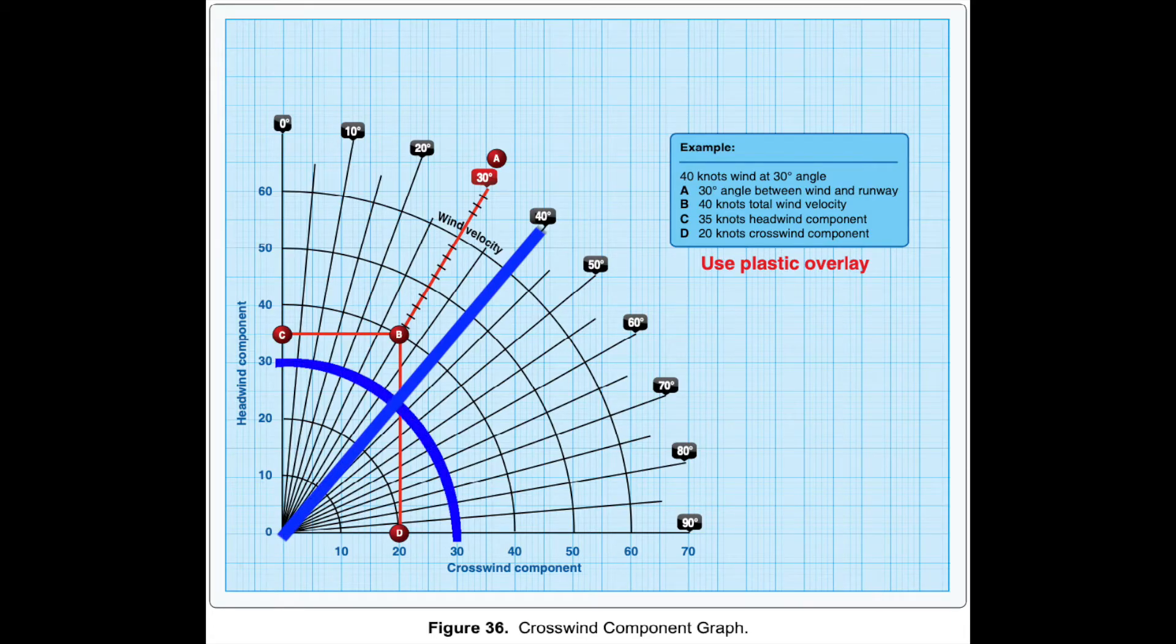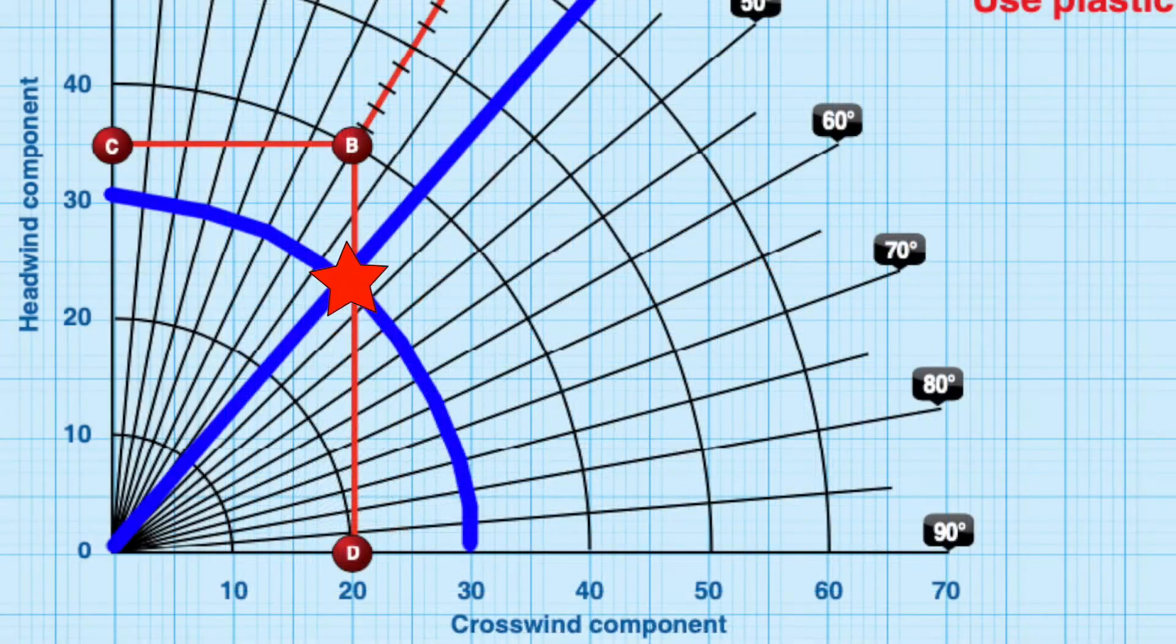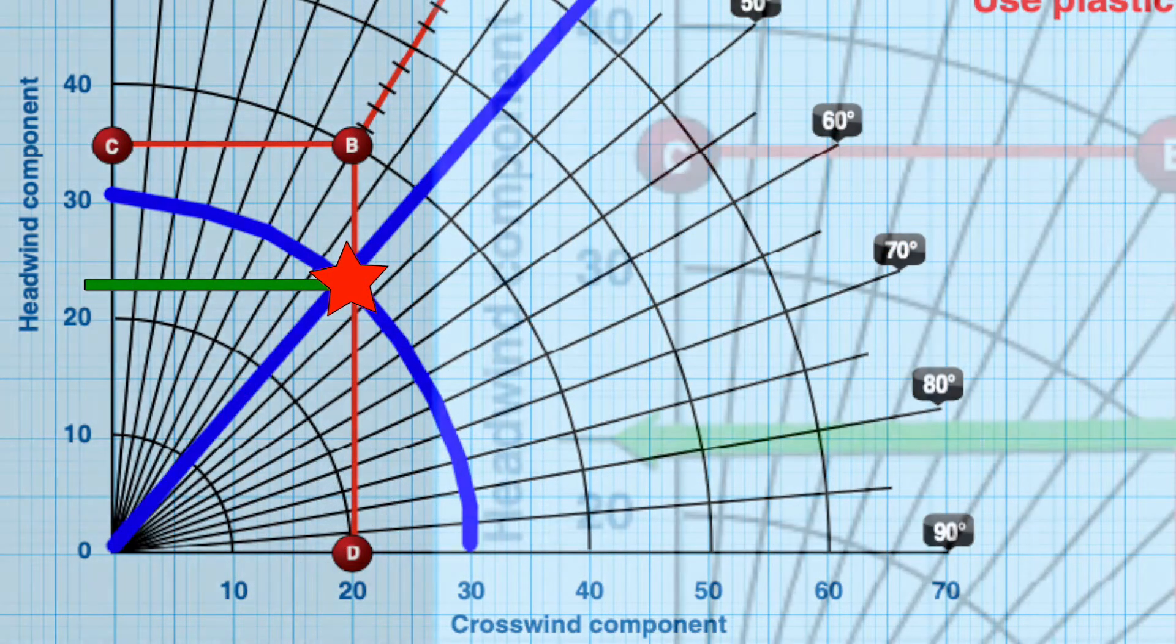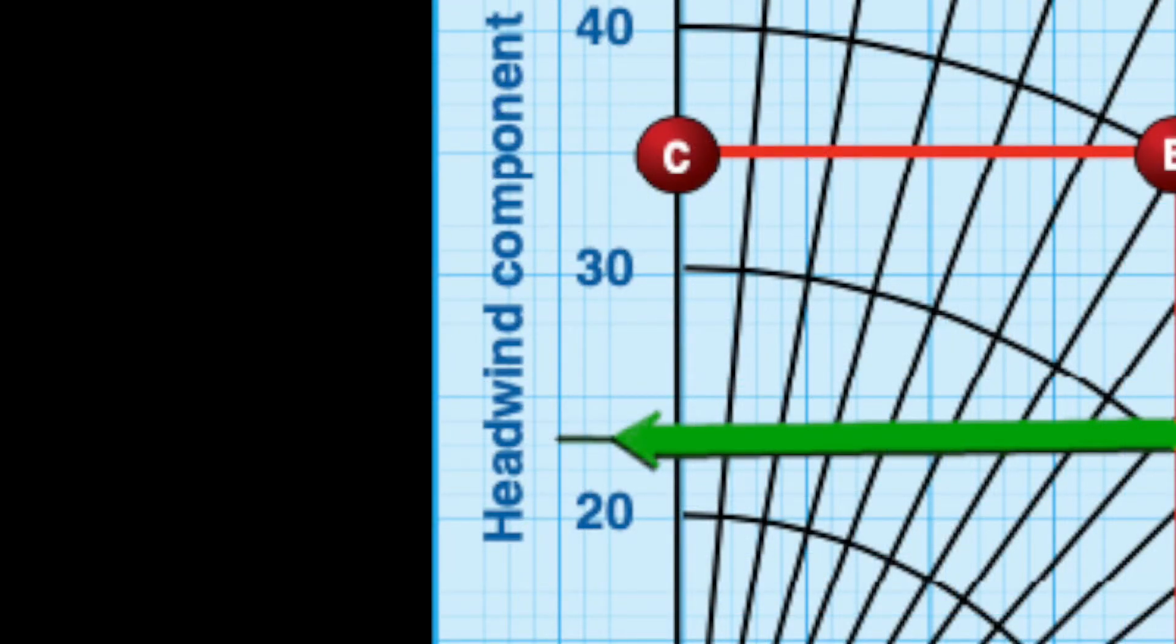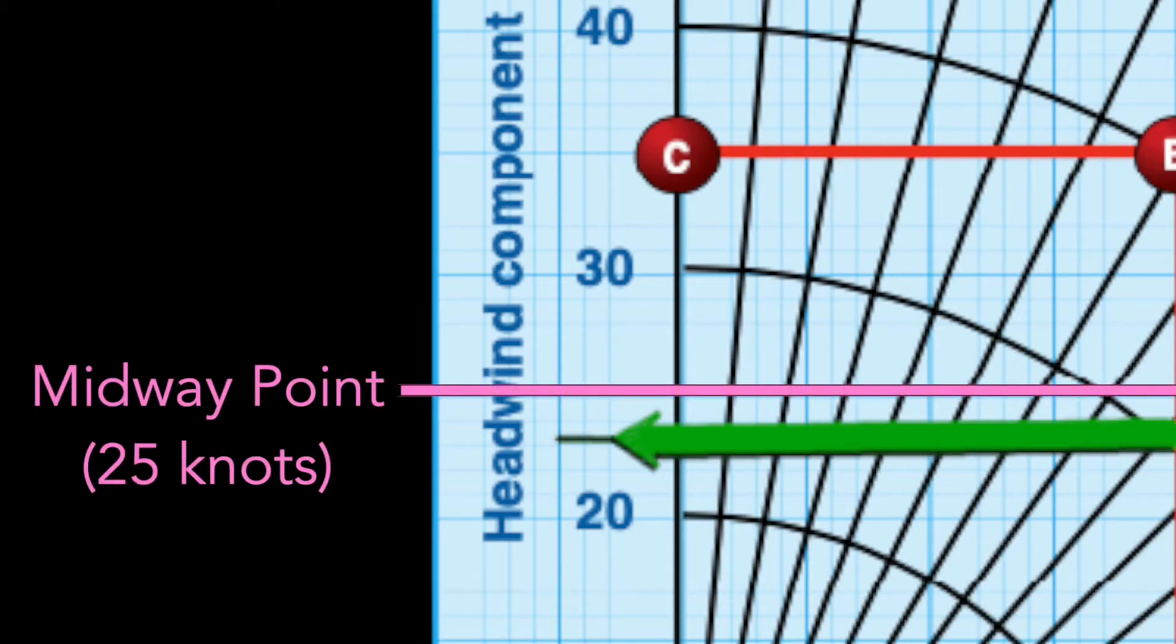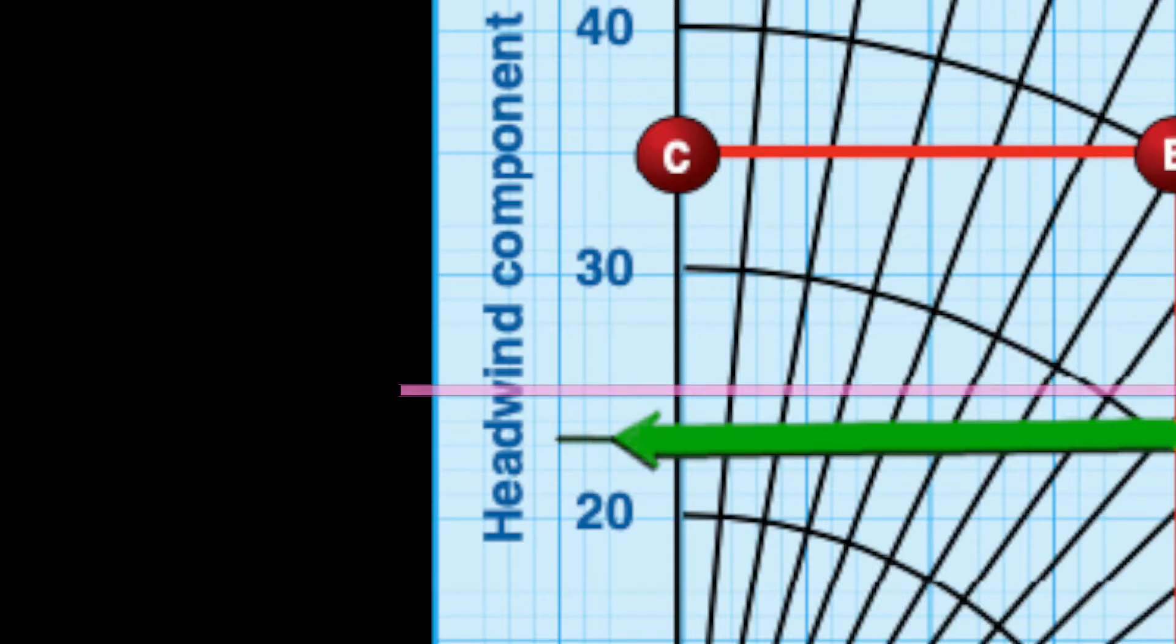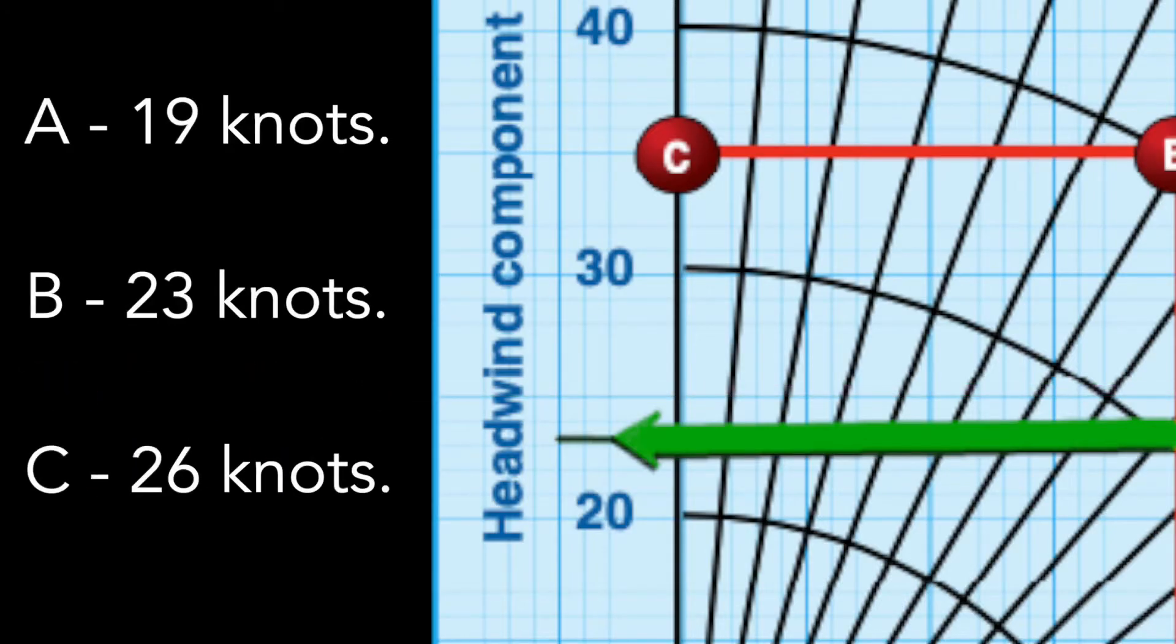Then we go to these curved lines and pick out the 30 line. We look to see where this creates a point with our 40 degree line. From that point, we draw straight across to the left and see what our reading is. Here it looks like we are definitely above 20 but below the midway point between 20 and 30.